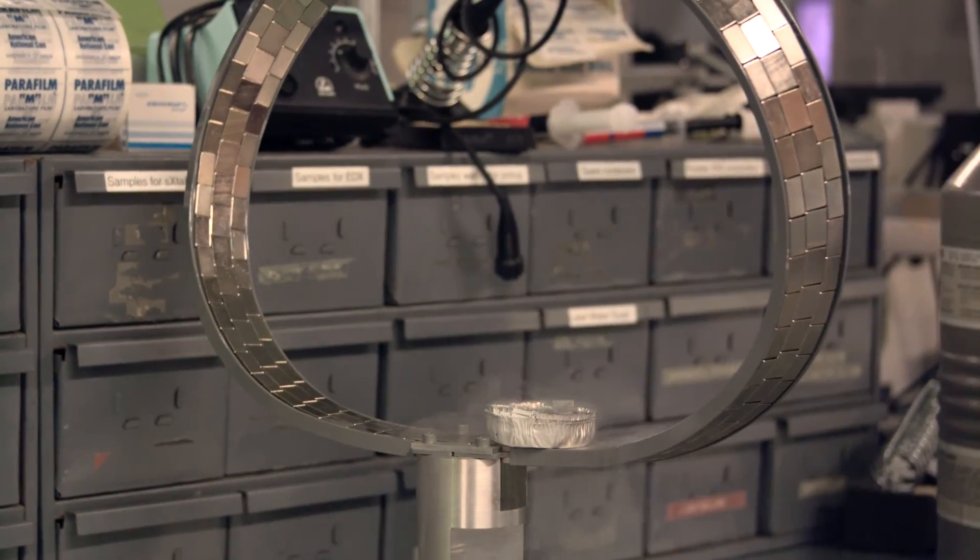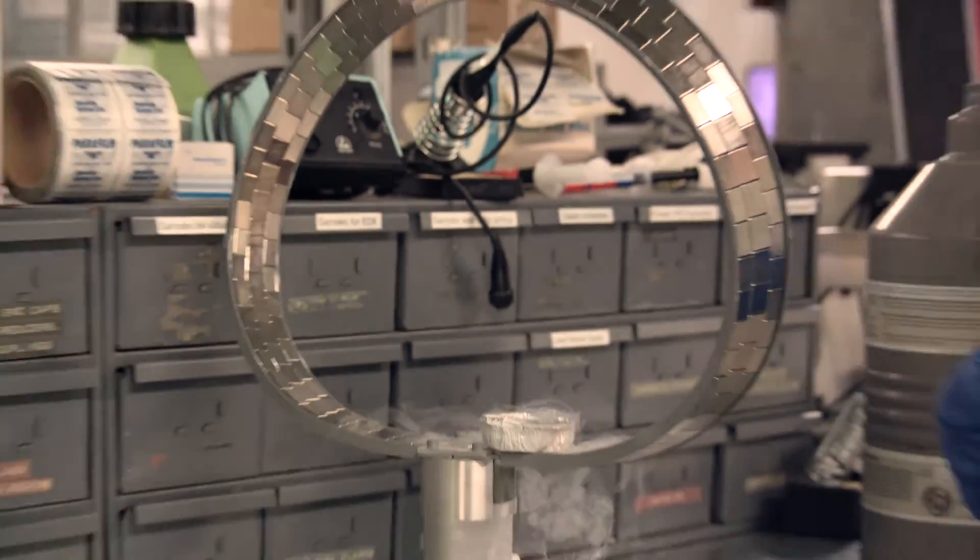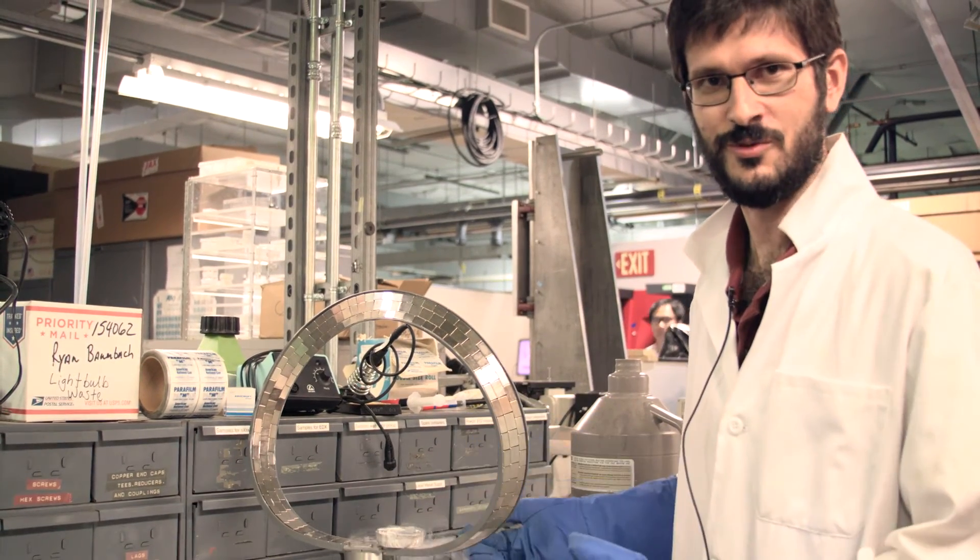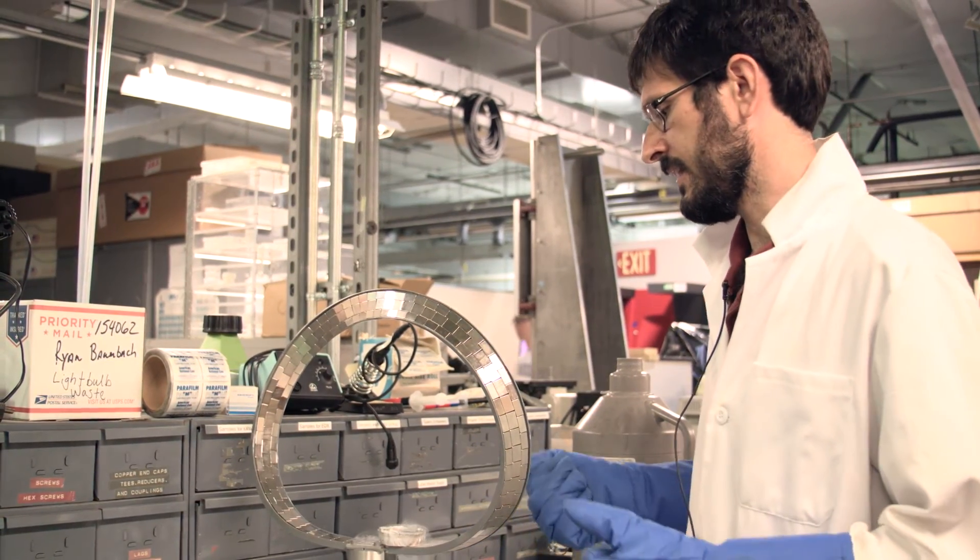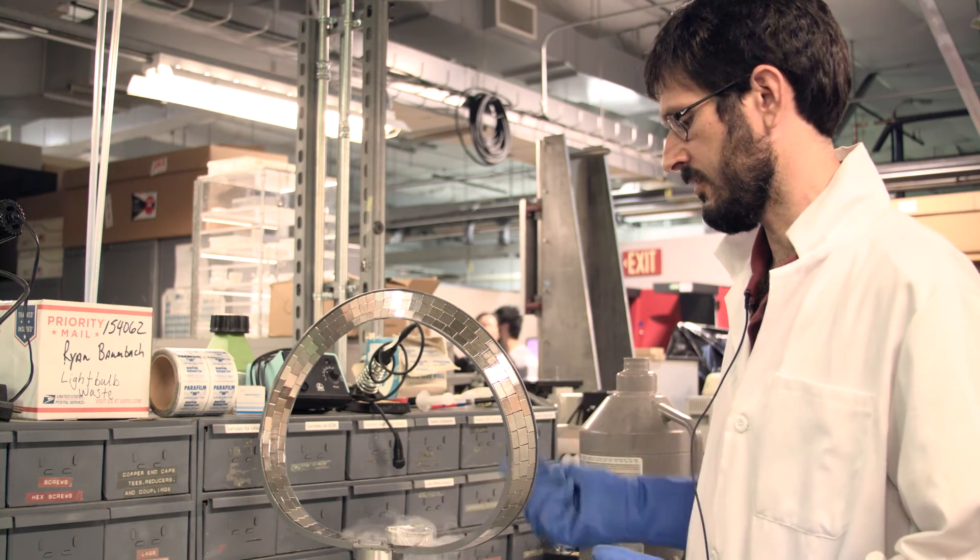So I said that the superconductor will expel a magnetic field. That means that they should repel each other. But the superconductor actually has one other property because it's what's called a type 2 superconductor.